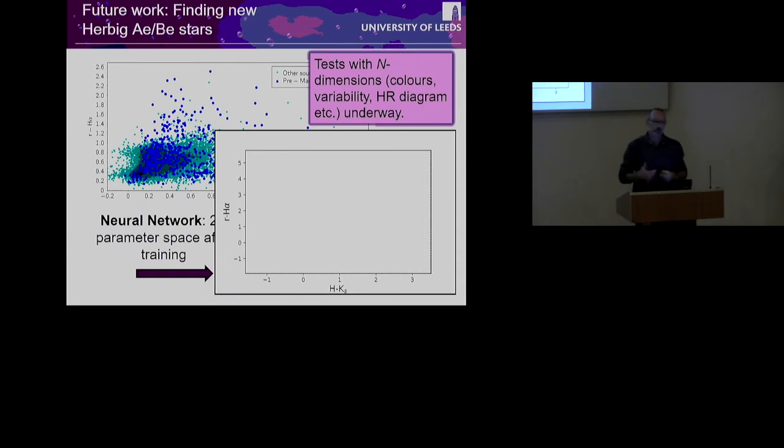So now we want to move on, use the HR diagram, look at the variability, et cetera, and do the neural network in n dimensions. We went up to 10 or something like that. That's something that we cannot really process with our own eyes.